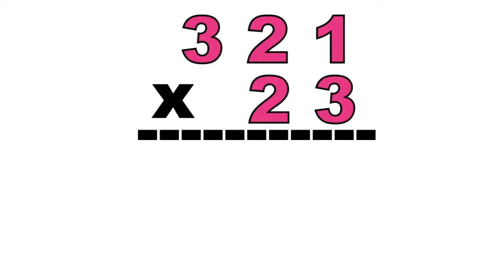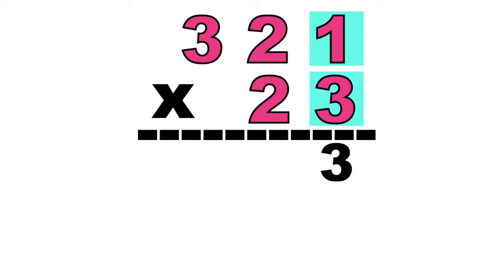So let's start at digit 3. We're going to multiply digit 3 on each digit at the first factor. 3 times 1 equals? Very good, that is 3. Let's write 3 under the 1s place.